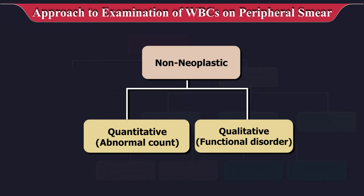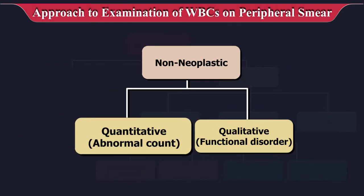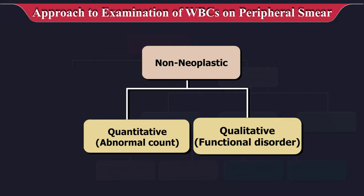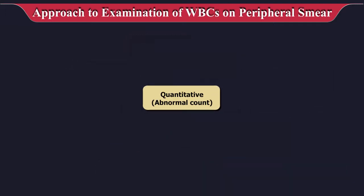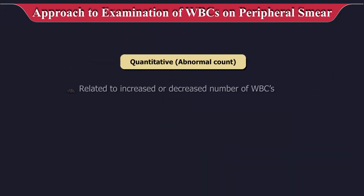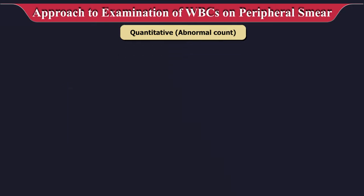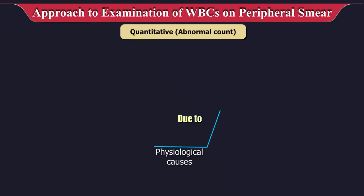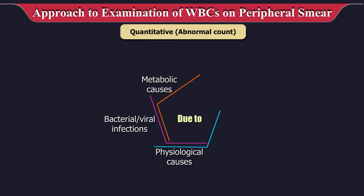The first step is to differentiate whether it is a non-neoplastic or a neoplastic disorder. Non-neoplastic disorders include quantitative and qualitative abnormalities as explained in the previous video. Quantitative abnormalities are related to increased or decreased number of white blood cells — leukocytosis or leukopenia — and can be due to physiological causes, bacterial or viral infections, metabolic causes, drugs and chemicals, or tissue destruction.